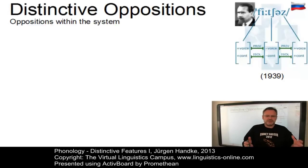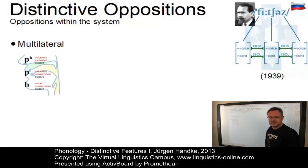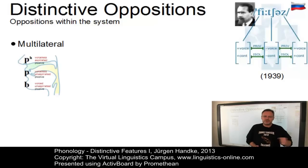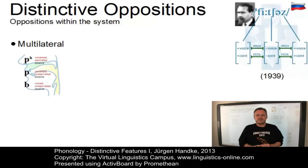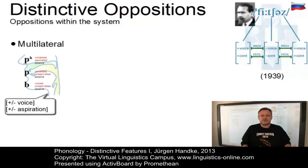Oppositions within the system can be defined according to Trubetskoy in three ways. Segments stand in multilateral opposition if there is more than one phonetic property that keeps them apart. For example, in languages like Korean, the system of plosives has always three members: voiced unaspirated plosives, voiceless unaspirated plosives, and voiceless aspirated plosives. There are two differentiating features: plus-minus voice and plus-minus aspiration.